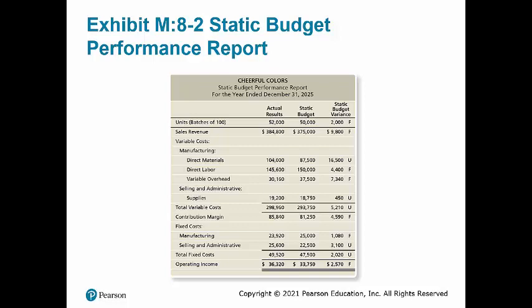A static budget variance is the difference between actual and expected results in the static budget. Cheerful Colors' static budget variance for operating income is favorable primarily because Cheerful Colors sold 52,000 batches of crayons rather than the 50,000 batches it budgeted to sell during 2025. A static budget performance report is useful when actual sales closely approximate the budgeted amount, and in evaluating fixed manufacturing costs and fixed selling and administrative expenses. However, it is not helpful in evaluating variable costs because as production changes, variable costs should change accordingly.